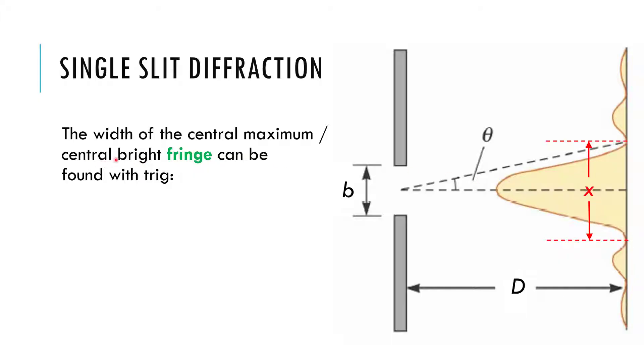So the width of the central bright fringe, we call these fringes a lot, these bright and dark spots. The width here, we can use some trig and solve.